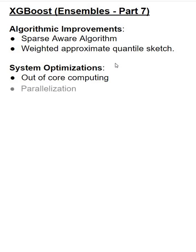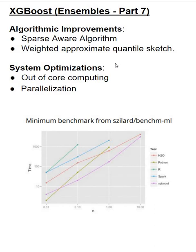The next optimization is parallelization. Parallelization is particularly useful when sorting data for building the tree. Sorting data consumes most of the time for tree building. To reduce the sorting cost in XGBoost, the data is stored in an in-memory unit called blocks, and each block has data columns sorted by the corresponding feature vector. This computation needs to be done only once before training, and the blocks are reused subsequently. This block generation and rebuilding is done using multiple threads and parallelly processed on the CPUs.